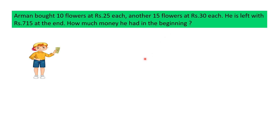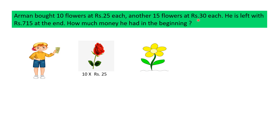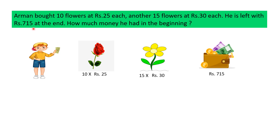This is Arman and he had some money. Now, he bought 10 flowers at Rs. 25 each — Rs. 25 each means the cost of 1 flower is equal to Rs. 25. He also bought 15 flowers at Rs. 30 each — Rs. 30 each means the cost of 1 flower is equal to Rs. 30. He is left with Rs. 715 at the end.